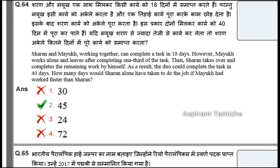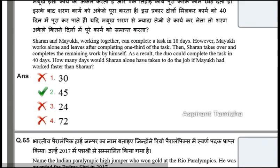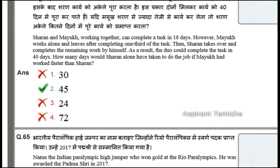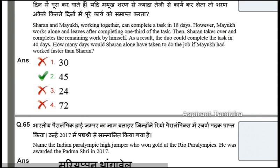The next question is a very tough question. Saran and Mayag working together can complete a task in 18 days. However, Mayag works alone and leaves after completing one third of the task, then Saran takes over and completes the remaining work by himself. As a result the duo took 40 days total.